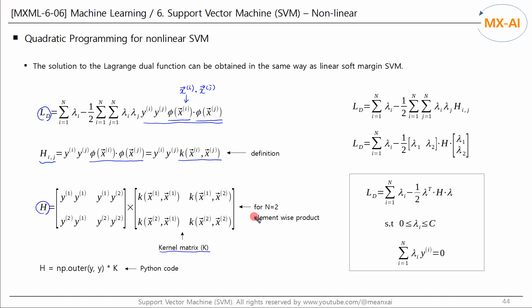This is an example where n, the number of data points, is 2, and this is element-wise multiplication. The Python code for calculating the matrix H is as shown. Using the matrix H, the dual function can be expressed accordingly. Both the objective function and constraints are the same as those of the linear soft margin SVM — the only difference is that matrix H contains the kernel matrix.